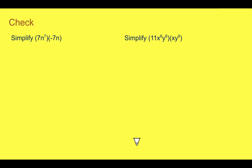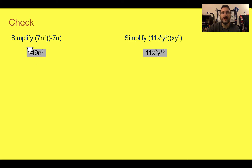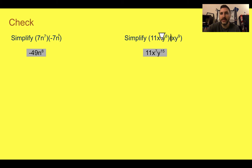Check your understanding — simplify these two products. Pause the video now and complete the check. The first answer should be negative 49n to the eighth. The other one should be 11x to the seventh, y to the fifteenth. For the first one, 7 times negative 7 is negative 49; n to the eighth comes from n to the seventh times n to the one, so seven plus one is eight. For the second, there's no coefficient so that's just a one; 11 times one is 11. X to the six times x to the hidden one is six plus one equals seven. For y, six plus nine is fifteen.